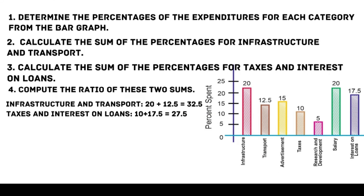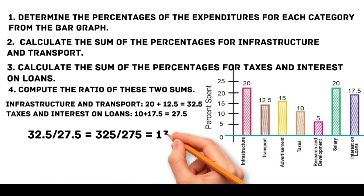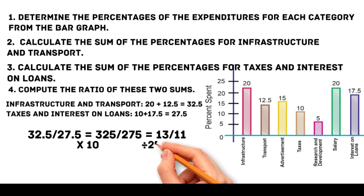The ratio of total expenditure on infrastructure and transport to taxes and interest on loans is 32.5 over 27.5. Multiplying numerator and denominator by 10 gives 325 over 275. Both are divisible by 25, so the simplified ratio is 13 over 11. The correct answer is B, 13:11.